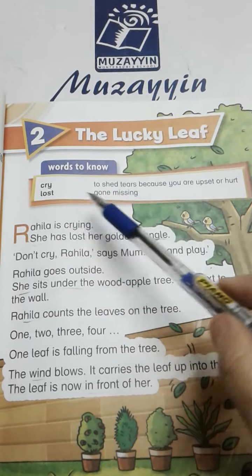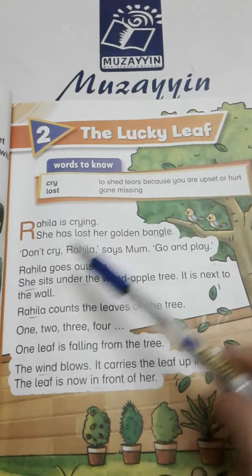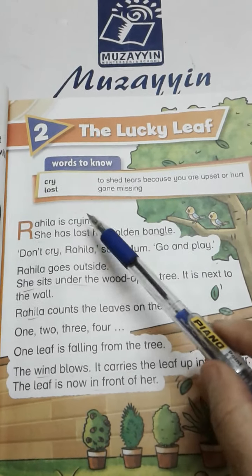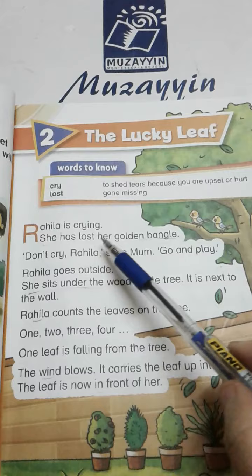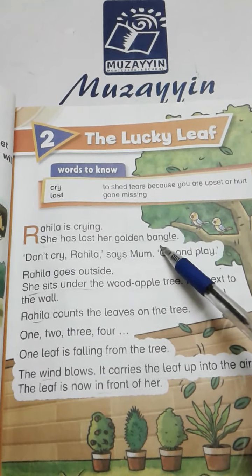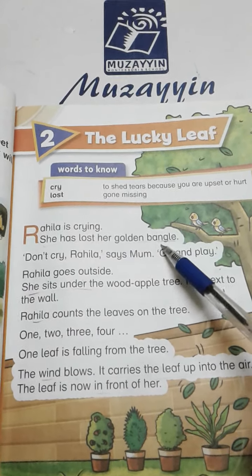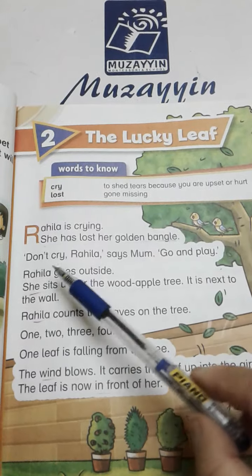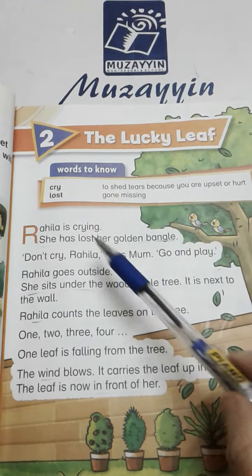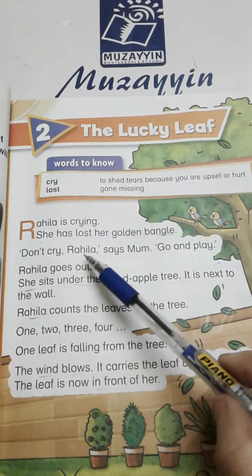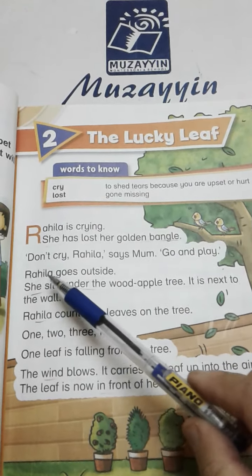Next word is 'lost' — gone missing. Lost کا مطلب ہے کسی چیز کا گم ہونا. Rahila is crying — Rahila رو رہی ہے. She has lost her golden bangle — اس کی سونے کی چوڑی گم ہو گئی ہے. Don't cry, Rahila, says mom — اس کی ممی کہتی ہے، Rahila رو نہیں، go and play — جاؤ اور کھیلو.